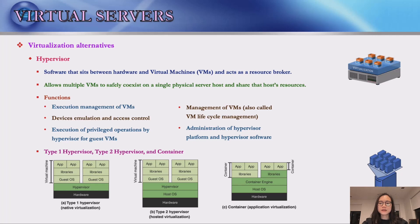A Type 1 hypervisor is loaded as a software layer directly on a physical server, much as an operating system is loaded — referred to as native virtualization. A Type 2 hypervisor exploits the resources and functions of a host operating system and runs as a software module on top of that operating system, relying on it to handle all hardware interactions — referred to as hosted or nested virtualization.